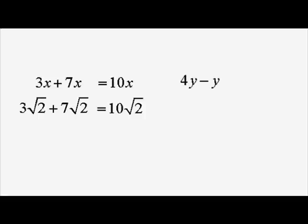Another example, 4y minus y is 3y. So 4√5 minus 1√5 is 3√5.